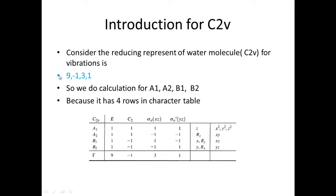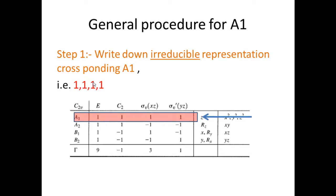This is a reducible representation. We can break it into A1, A2, B1, B2. So we do the calculation for A1, A2, B1, B2 because it has 4 rows in the character table, so we do calculations for all rows. This is a general procedure for A1; we take A1 because it is the first row.